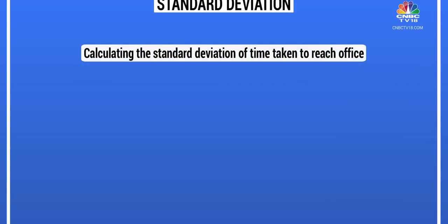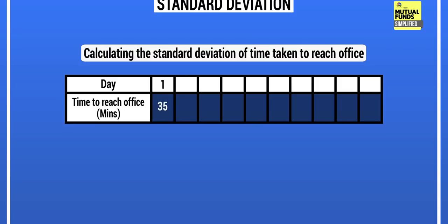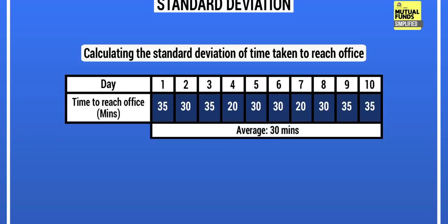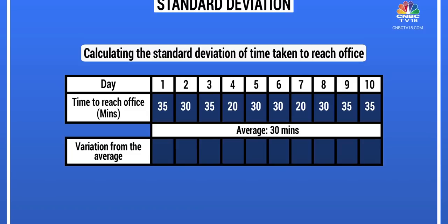For example, say you want to calculate the standard deviation of the time it takes to reach your office. On day one you took 35 minutes, day two 30 minutes, day three 35 again, day four 20 minutes, and so on for 10 days. The average works out to 30 minutes. Any variation from this expected outcome is the risk to your time estimate, and therefore the standard deviation.